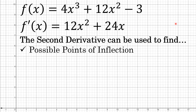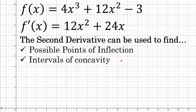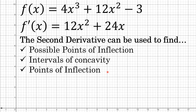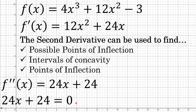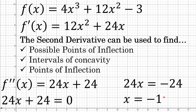We've covered everything from the first derivative. Now we use the second derivative to find possible points of inflection. The second derivative of 12x squared plus 24x is 24x plus 24. Setting 24x plus 24 equal to zero and solving gives x equals negative 1, which is a possible point of inflection — a place where the graph could change concavity.